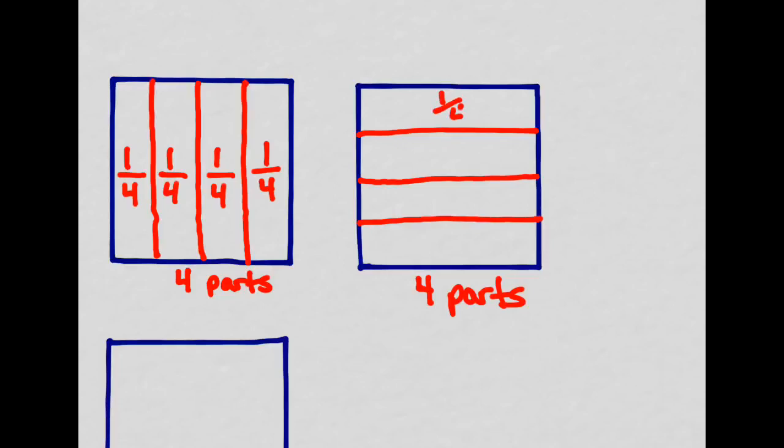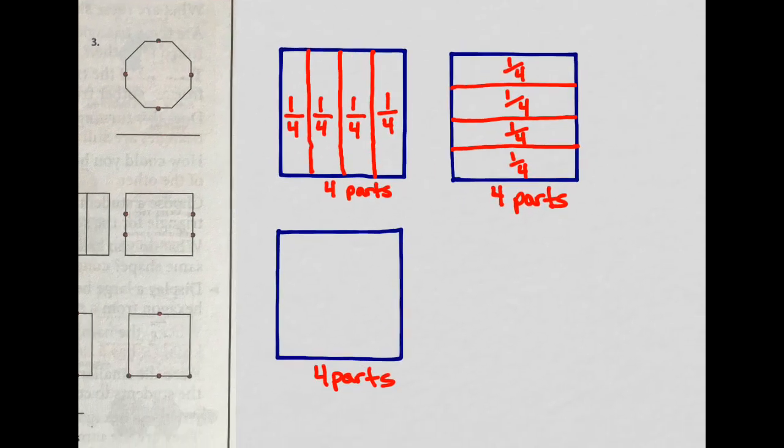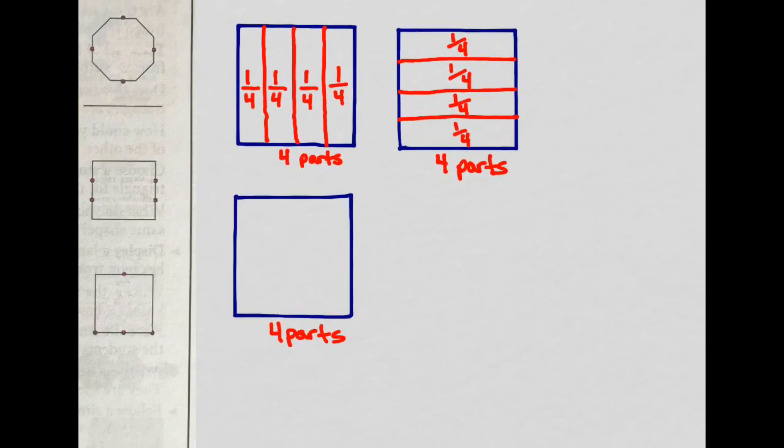I'm going to try to make them as equal as I can. They also need to be labeled. That piece is one-fourth of the square. This second piece is one-fourth of the square. This third piece is one-fourth. And the last piece is one-fourth of the square. Now, can you think of one other way that we can divide this square into four equal parts? Think about it for a second.